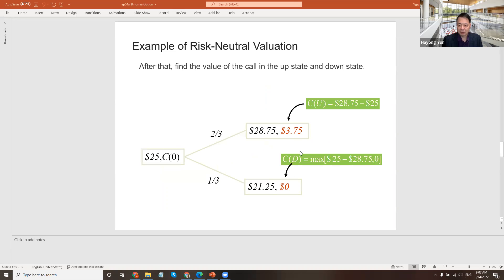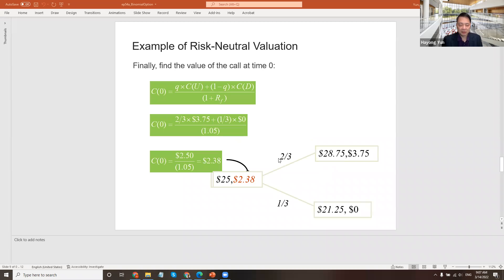We know the final day option payoff is $3.75 and zero, which is the difference between stock price and strike. If negative, it's zero. We know Q, we know the formula value. The initial value of the option is Q times C(U) plus (1-Q) times C(D), discounted by (1+R). We plug in the numbers: $2.38. That is the initial day option price for the right to pay $25 to get a stock. The right to have that contract costs $2.38. That is the price of the option.